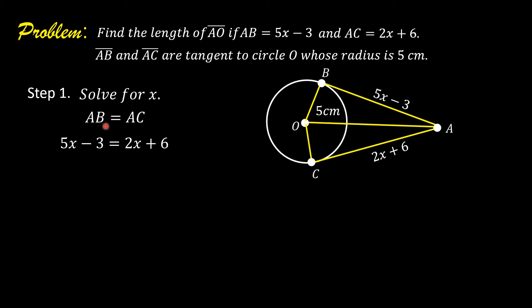Transpose 2X to the left side, changing its sign from positive to negative. Transpose negative 3 to the right side, changing its sign from negative to positive. So we have 5X minus 2X is equal to 6 plus 3, giving us 3X is equal to 9. Dividing both sides by 3, X is equal to 3.